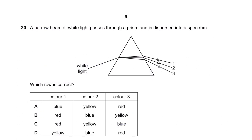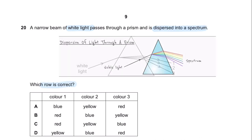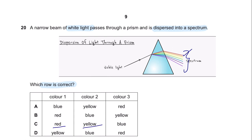Question 20. A narrow beam of white light passes through a prism and is dispersed into a spectrum. Which row is correct? Please make sure you remember the order of the colors. The right option would be red, followed by yellow, and then blue. So the answer is C.